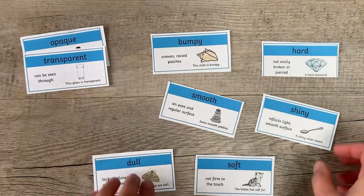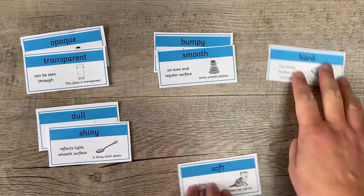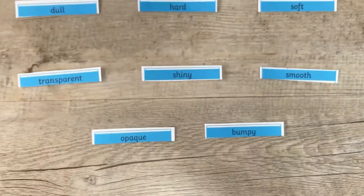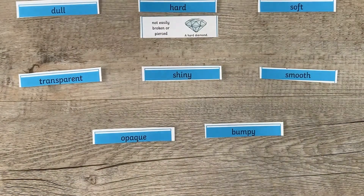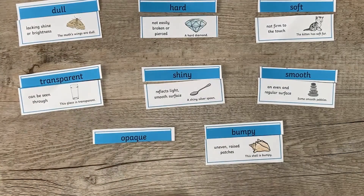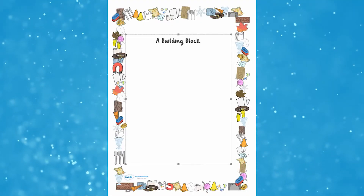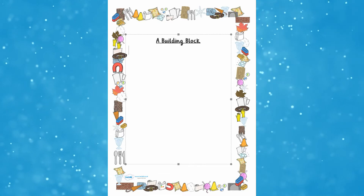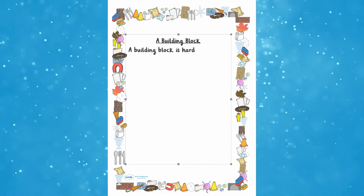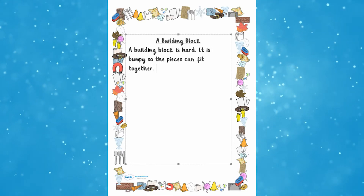Can they find an example for each of the different properties? Why not cut the poster up and see if the children can match opposite properties? Or you could snip the property off the top and see if the children can match them back together again? They can also be used to support writing up science experiments or descriptive writing.